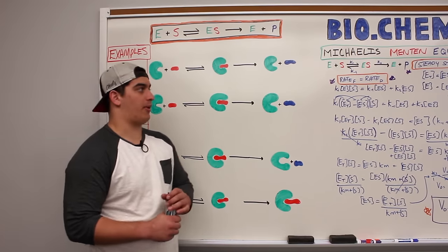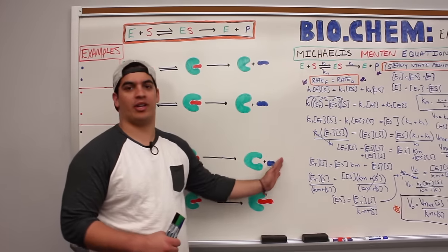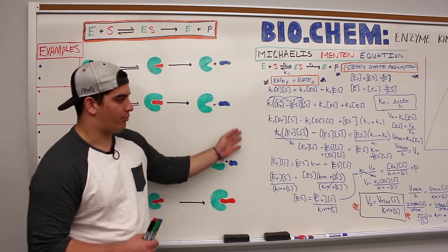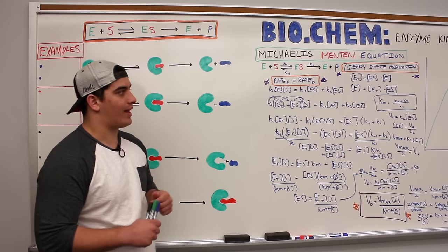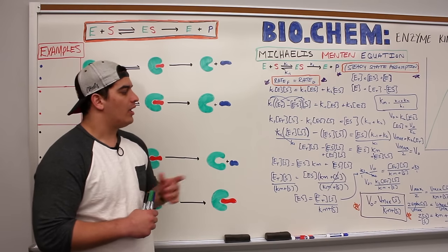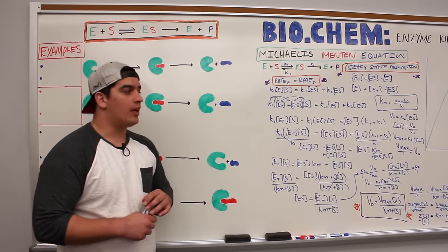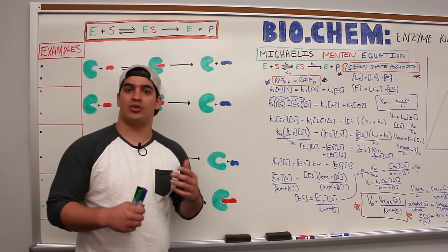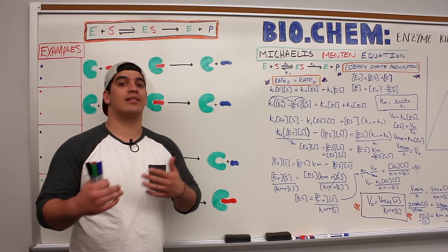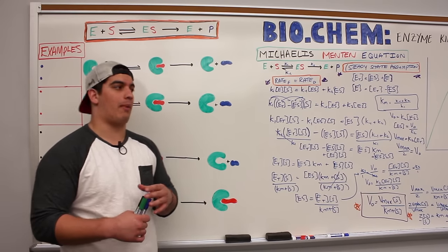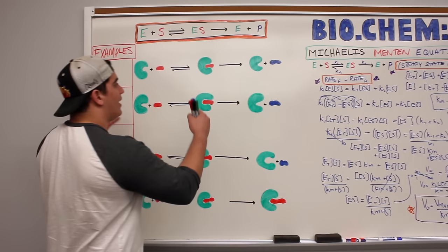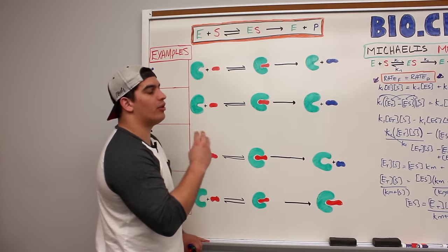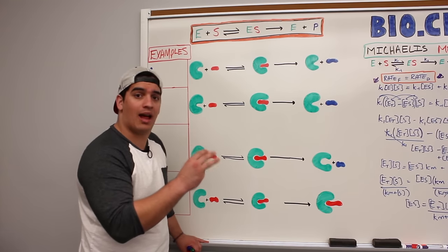In the last video, we talked about the Michaelis-Menten equation. We derived the entire equation algebraically and got some big points out of that: the steady-state assumption, the Michaelis-Menten equation itself, and the Michaelis constant and its relationship to substrate affinity and substrate concentration at half Vmax. In this video, we're going to introduce inhibitors, and in the third video we'll apply these concepts to graphs and plots.